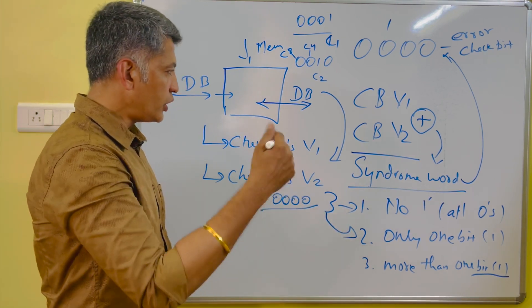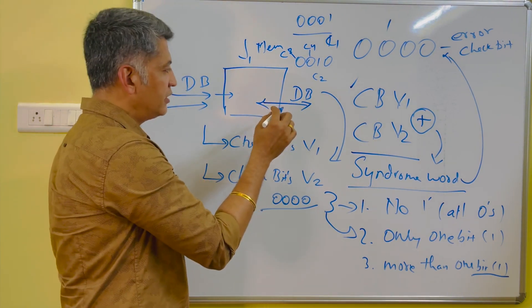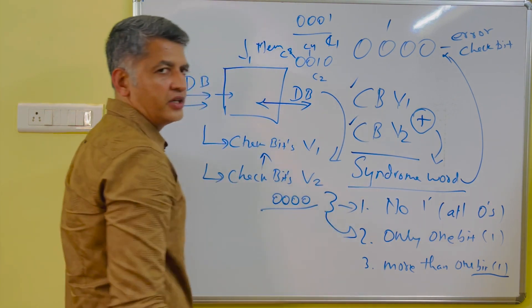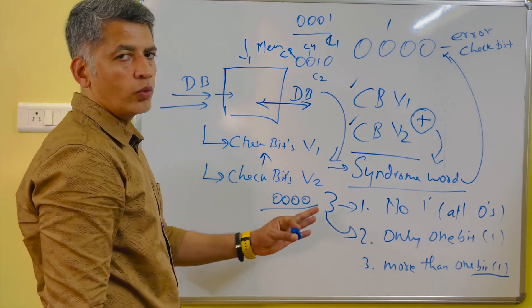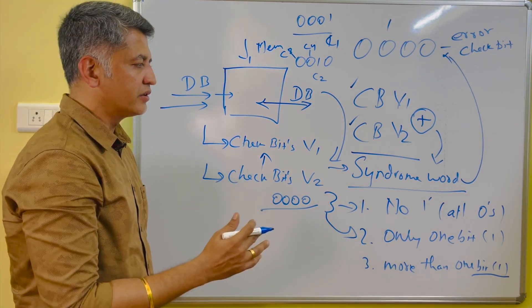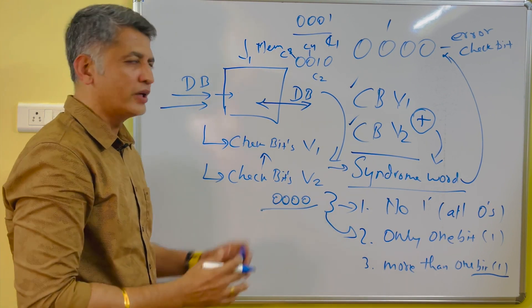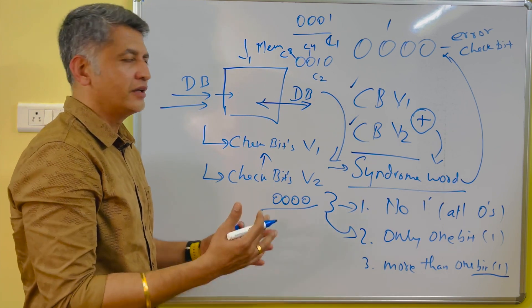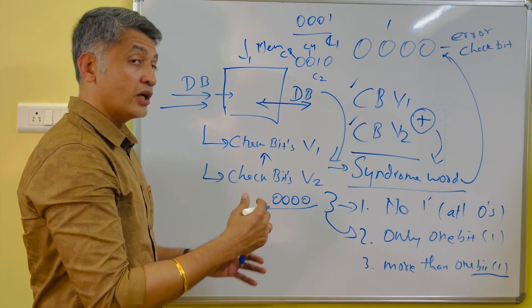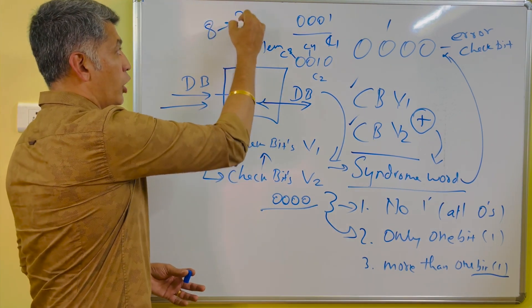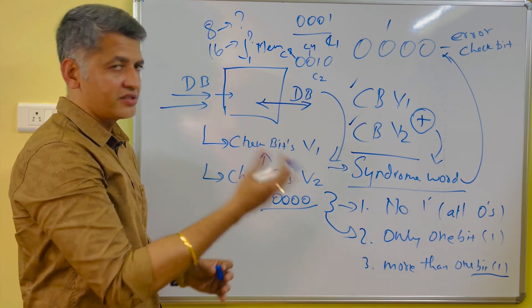So, in conclusion: while storing the data bit into memory, check bit version 1 will be generated. While retrieving the data from memory, check bit version 2 will be generated. If you do an XOR operation between check bit version 1 and check bit version 2, you can calculate the syndrome word and find out whether there is an error in the data bit or not. With the help of syndrome word calculation, error detection is possible. In the next video, we will see how to calculate the check bits and how many check bits are required — for example, if you have 8-bit data or 16-bit data, how many check bits are needed.